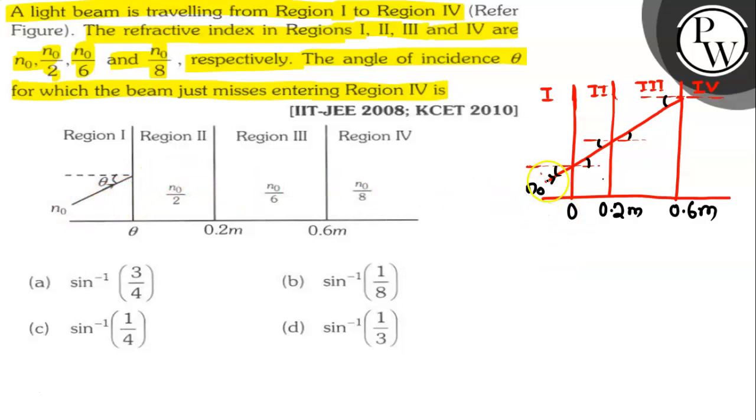So, this is n0 and this angle is θ. This one is R. Also, this angle is R. So, this angle is θc.